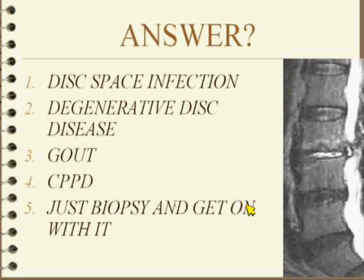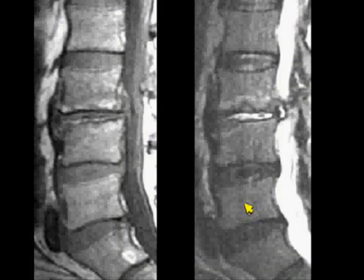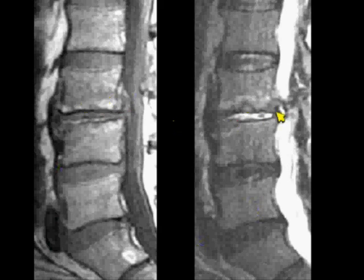The answer — you said degenerative, and you don't know how good you made me feel, because that's what I called on this case. I'm an expert on this, so I know this stuff. Here we have degenerative end plate changes, type 2. I'm really happy when I see degenerative end plate changes like this. I've got a little high signal in the disc, but I've got degenerative end plate changes — cracks and fissures within the disc. No big deal.